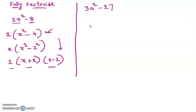So we will take out the common number. 3 is common. Write down the remaining equation: a² minus — 3 into 9 is 27 — so we get 3(a² minus 9). If we multiply 3 back inside the bracket we get 3a² minus 27, which confirms this is correct. So 3 and (a² minus 9) are the factors.